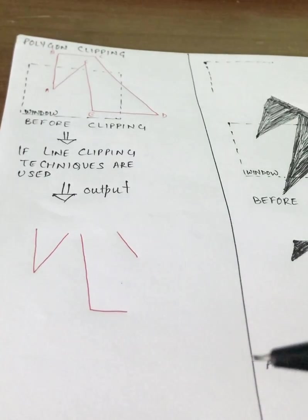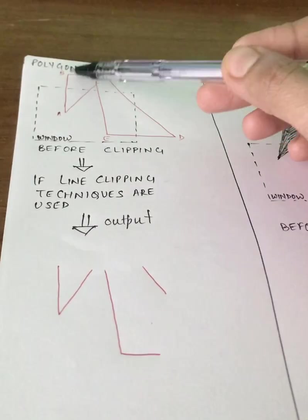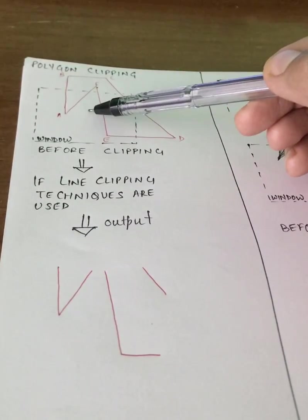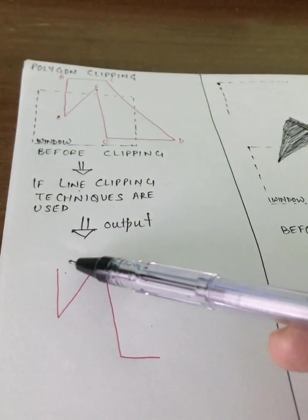This is what I'm talking about: unconnected line segments. This is before clipping. This is my polygon A, B, C, D, E, F before clipping. If line clipping techniques are used, this is the output that I'm getting.